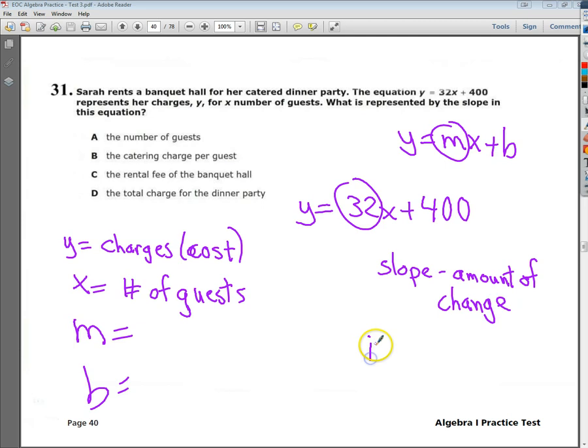And the b value, or your intercept, represents your starting point.